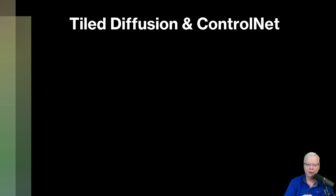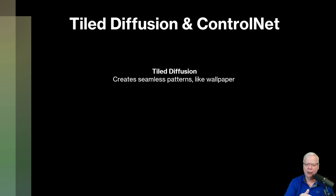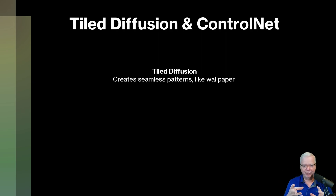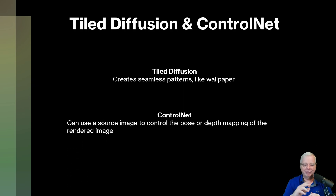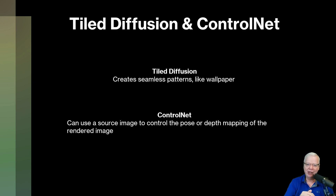Then we come to tile diffusion and ControlNet. Tile diffusion is pretty simple — when you create an image, it will look at that image and make sure it can be continued in any direction without any seams. Somewhat similar to making wallpaper where you want it to look like one big image rather than small images put together. There's also tiled VAE, which is a VAE just for tile diffusion models. ControlNet is kind of new to Stable Diffusion and is a great toolset. It can take a picture you give it and transfer that pose to the image you're making. For example, if you want a robot doing a handstand, you take an image of a person doing a handstand, put it in ControlNet, generate your picture, and you have a robot doing a perfect handstand.